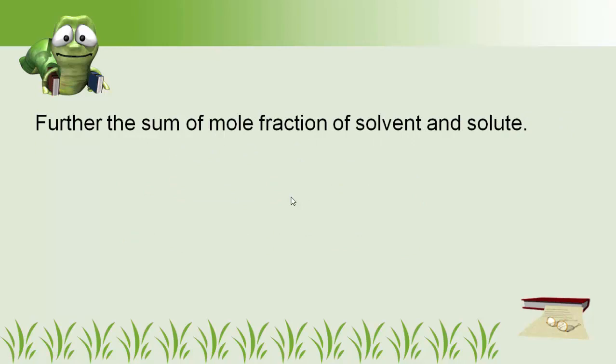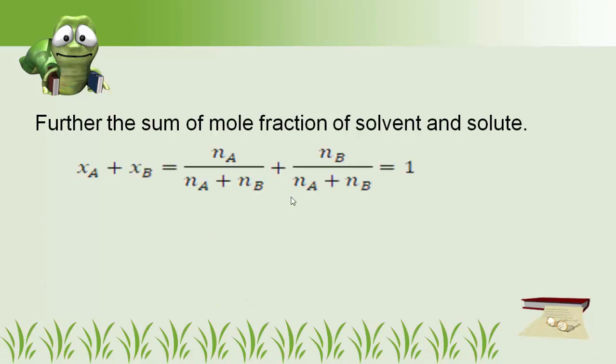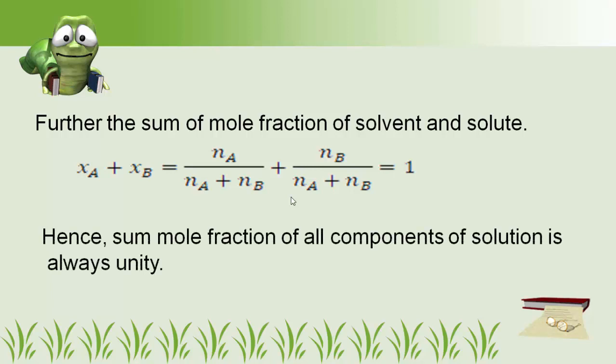Further, the sum of mole fractions of solvent and solute — that is XA + XB = Na/(Na + NB) + NB/(Na + NB) = 1. This means the sum of mole fractions of all components of a solution is always unity.